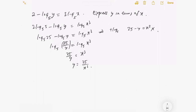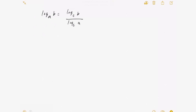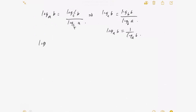Next is changing the base of logarithm. Sometimes you have logarithms at different bases that you cannot simplify. The formula is: log_a b = log_c b / log_c a, where c is any new base you introduce. A useful shortcut: if you use base b itself, then log_b b = 1, so log_a b = 1 / log_b a. For example, log_3 5 = log_2 5 / log_2 3, or log_4 7 = 1 / log_7 4.